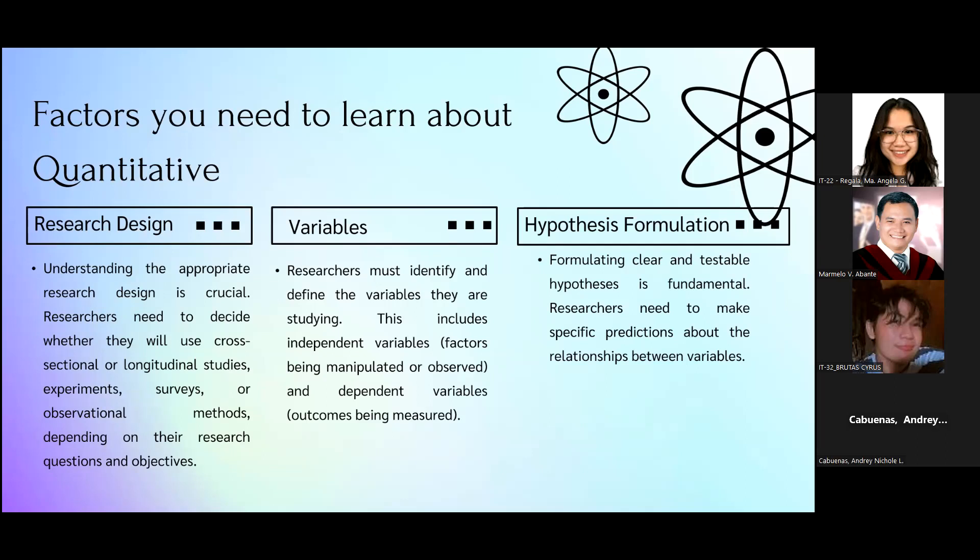In variables, researchers must identify and define the variables they are studying. This includes independent variables, factors being manipulated or observed, and dependent variables, the outcome being measured. In hypothesis formulation, formulating clear and testable hypotheses is fundamental. Researchers need to be specific predictions about the relationship between variables.